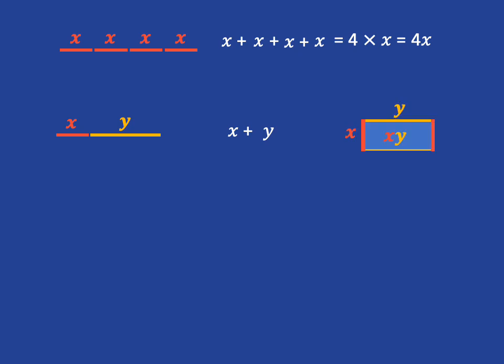Very tempting it might be to write it as XY, right? But remember, XY is X multiplied by Y, and when you're multiplying two variables together, you're going to end up with the area of the rectangle. So XY is very different to X plus Y. We can't simplify X plus Y because we don't have like terms.